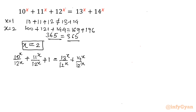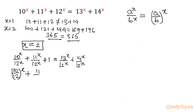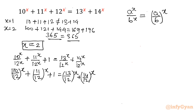We know the exponent rule: a^x / b^x = (a/b)^x. Now observing the bases: (10/12) and (11/12) are proper fractions — their numerators are smaller than the denominator — so both lie between 0 and 1.